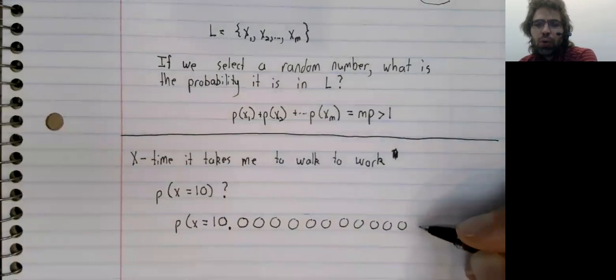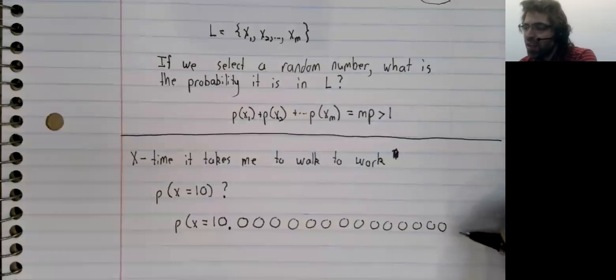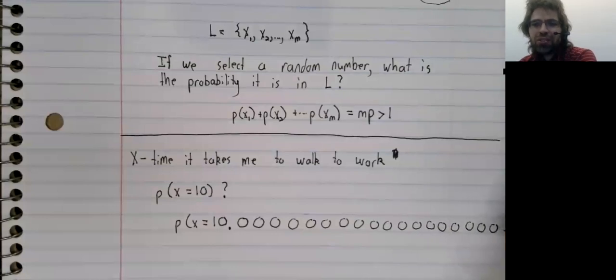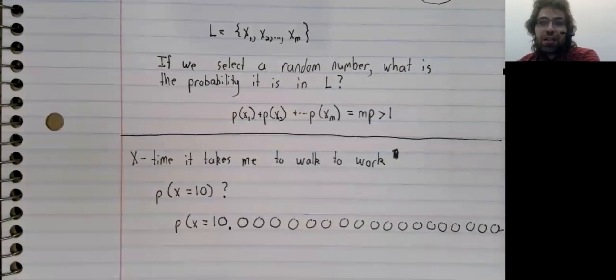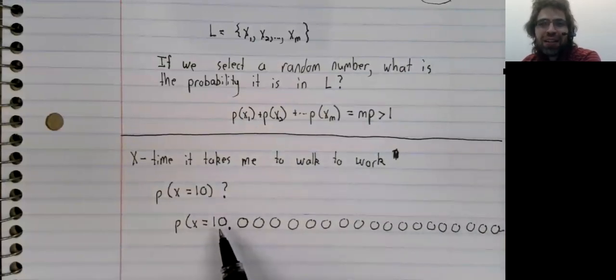Not off by a thousandth of a second or a millionth of a second or a billionth of a second - the probability that it takes me exactly 10 minutes, yeah, that's zero. There is always going to be some kind of number in one of these decimal places. It's not going to be 10 followed by an infinite number of zeros.